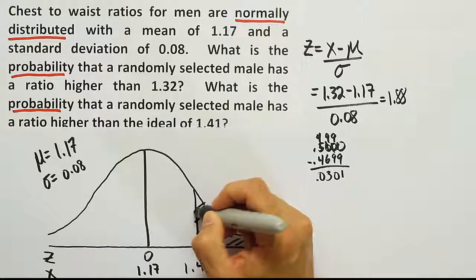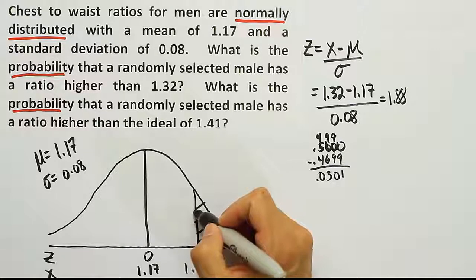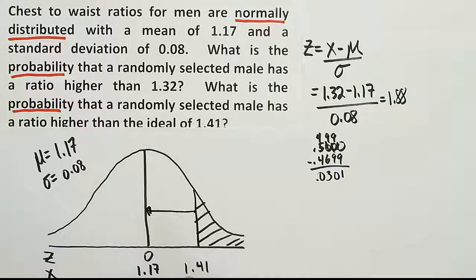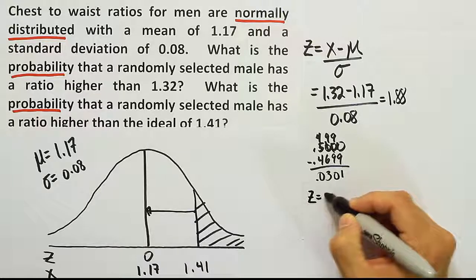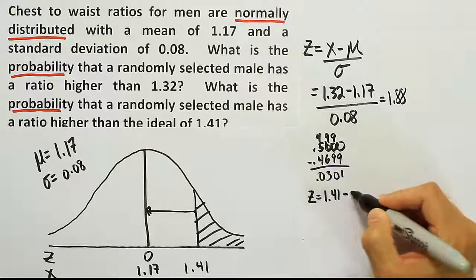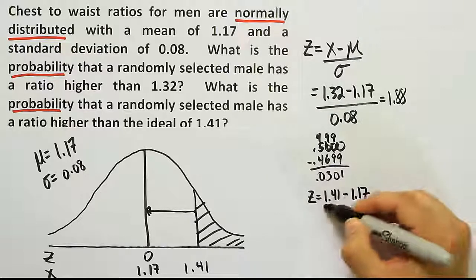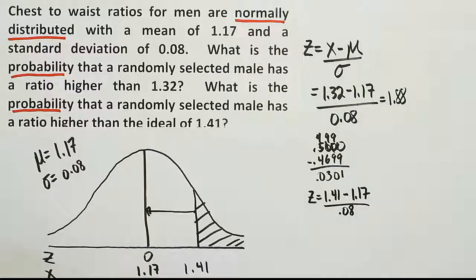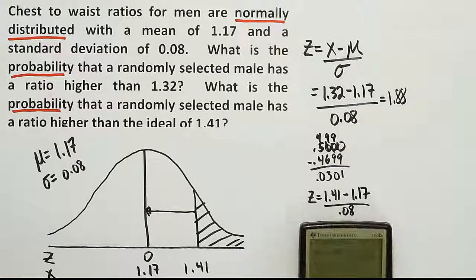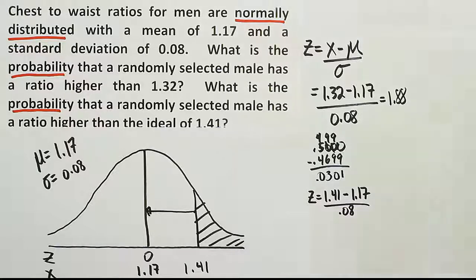So if I look up 1.41, once I convert it to a z-score I'll get the area from here to here. Remember we can't look up 1.41 yet. We have to first calculate the z-score for 1.41. So let's go ahead and do that. The z-score for 1.41 will be 1.41 minus the 1.17 divided by 0.08. And if I do that, 1.41 minus 1.17 divided by 0.08, which would give us 3 even. So we get this answer 3.00.